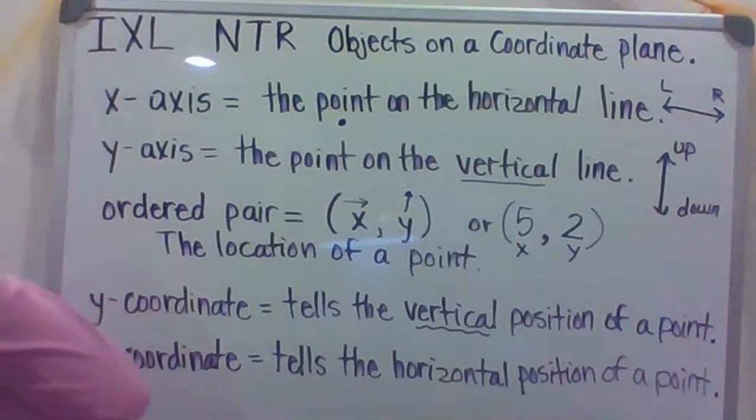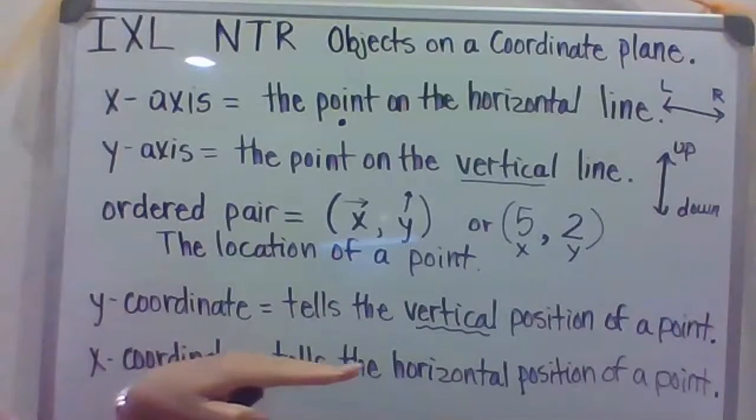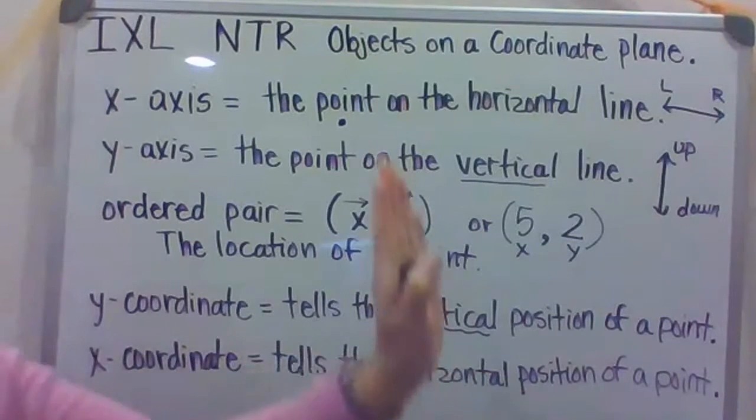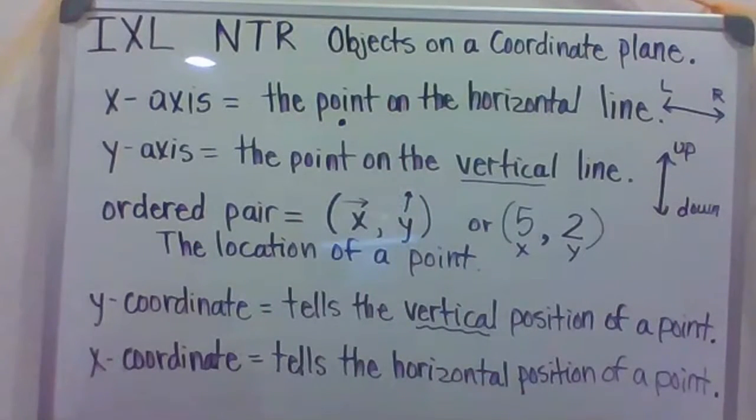So if you guys think about our wow chart in class, when we would call out the wow chart winners, again, going across the coordinate plane, and then up. So think of that airplane. So the two more terms you'll need is the Y-coordinate, so that tells the vertical position of a point on a coordinate plane, and the X-coordinate tells that horizontal position of a point on a plane.